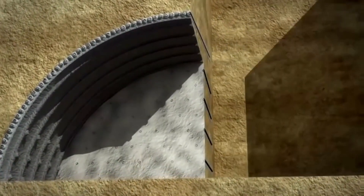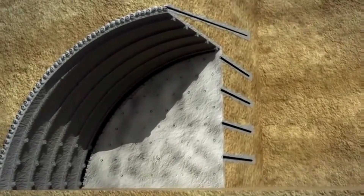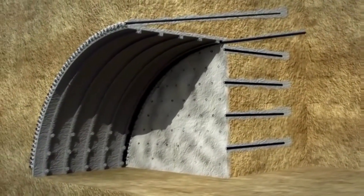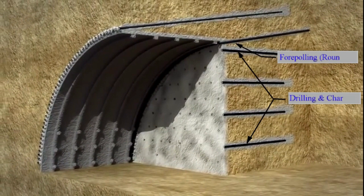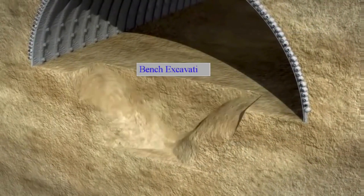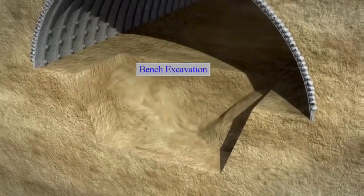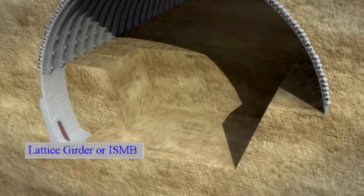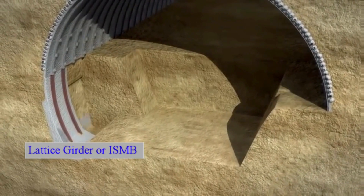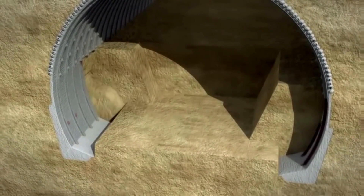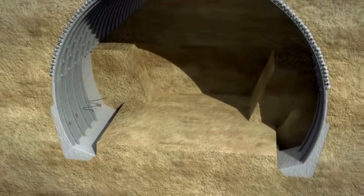Ventilation and lighting systems are also installed to provide a safe and comfortable environment within the tunnel. These systems ensure that fresh air circulates, preventing the buildup of harmful gases and maintaining visibility. Finally, the tunnel is finished with its interior design and paving, transforming it into a functional and aesthetically pleasing passage. The engineers carefully plan the road surface, signage, and lighting to ensure optimal safety and efficiency for the users.